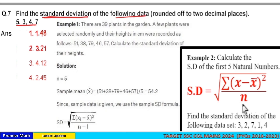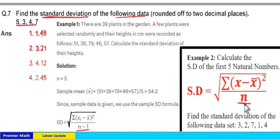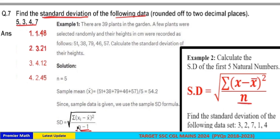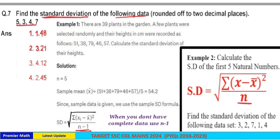There is only one difference between these two formulas. In the first case, you should use n in the denominator, and in the second case, you should use n minus 1 in the denominator. If you have data of the whole population, use n in the denominator. If you do not have data of the whole population, then use n minus 1 in the denominator.